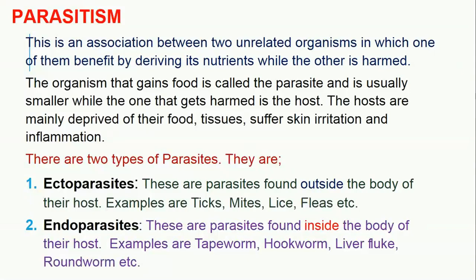The third type is parasitism. This is an association between two unrelated organisms in which one of them benefits by deriving nutrients while the other is harmed. The organism that gains food is called the parasite and is usually smaller, while the one that gets harmed is the host. Hosts are deprived of food, and their tissues suffer skin irritation and sometimes inflammation. There are two types of parasites: one, ectoparasites — the word 'ecto' stands for outside — these are parasites found outside the body of their host, examples are ticks, lice, and fleas.